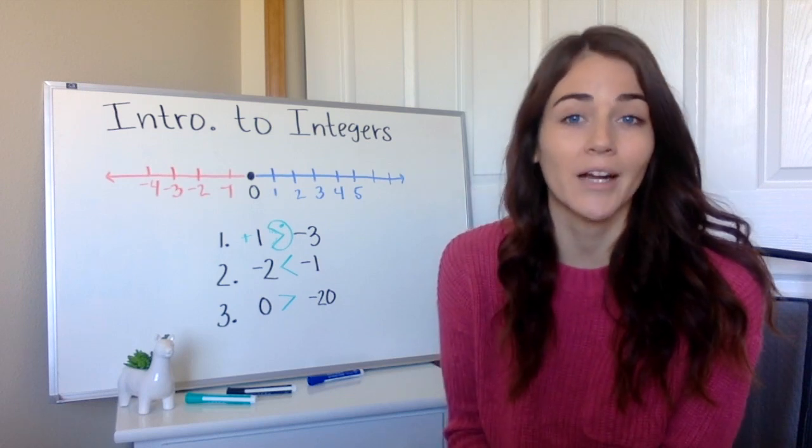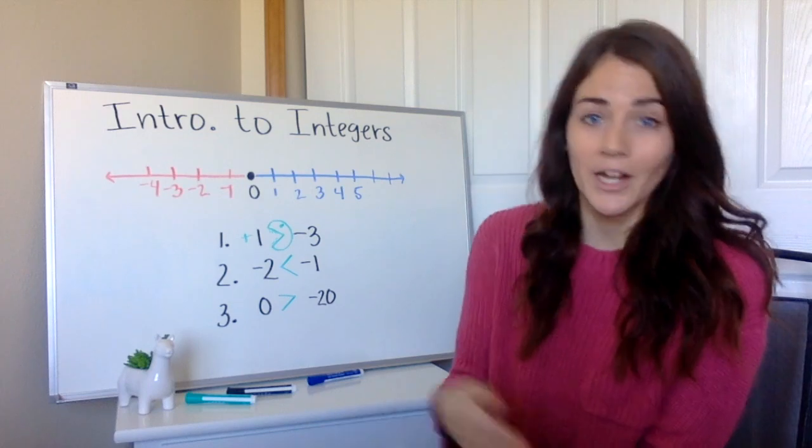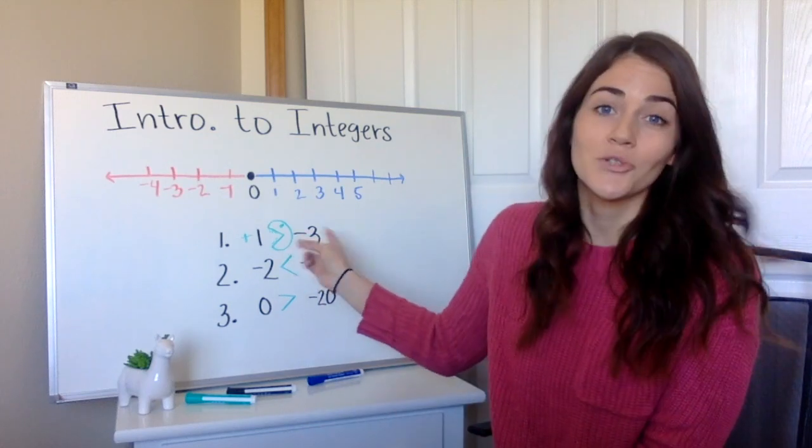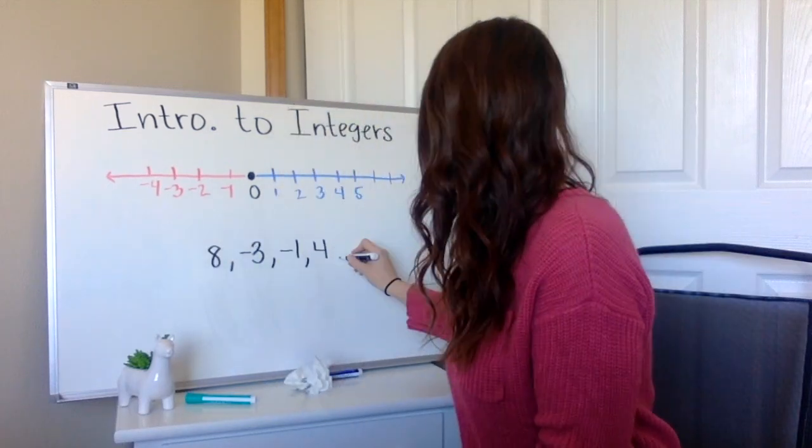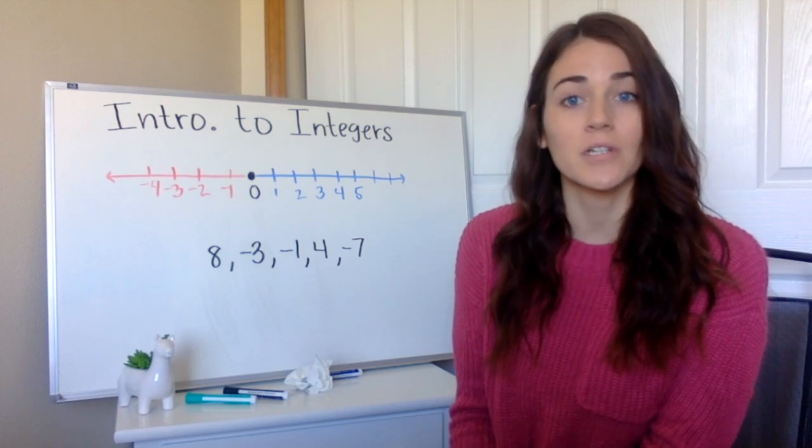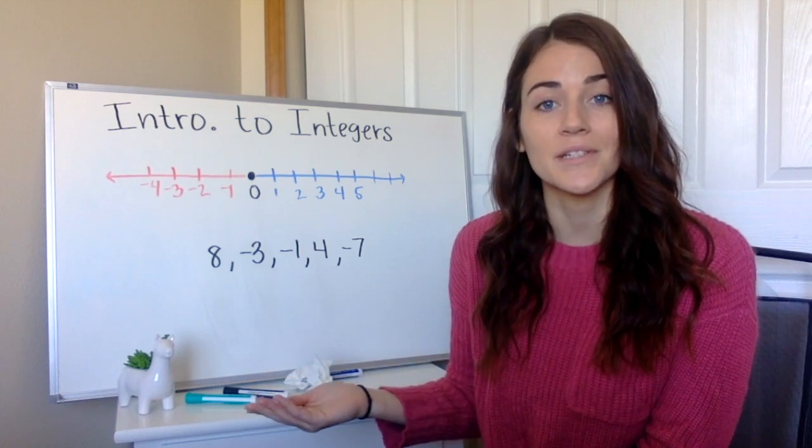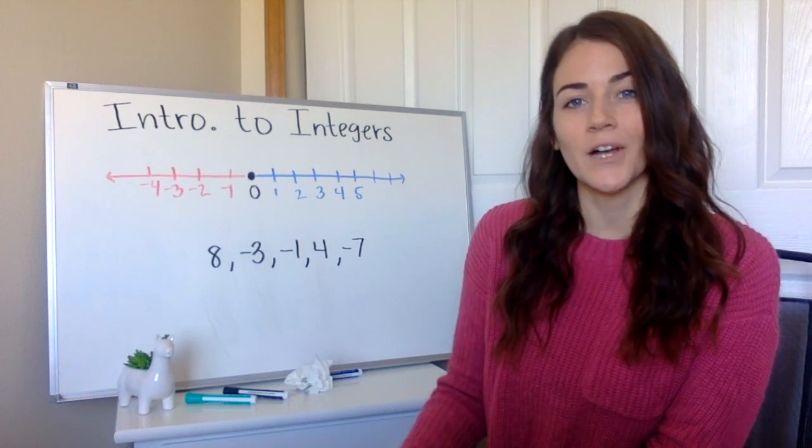Now that we know how to compare, we should also be able to order because ordering is just comparing, but except instead of only two numbers, we're going to have five. So again, with this one, if you want to go ahead and pause and try it for yourself and then continue watching to see if you did it right, you can go ahead and do that. Otherwise, you can just keep watching and follow along with me.